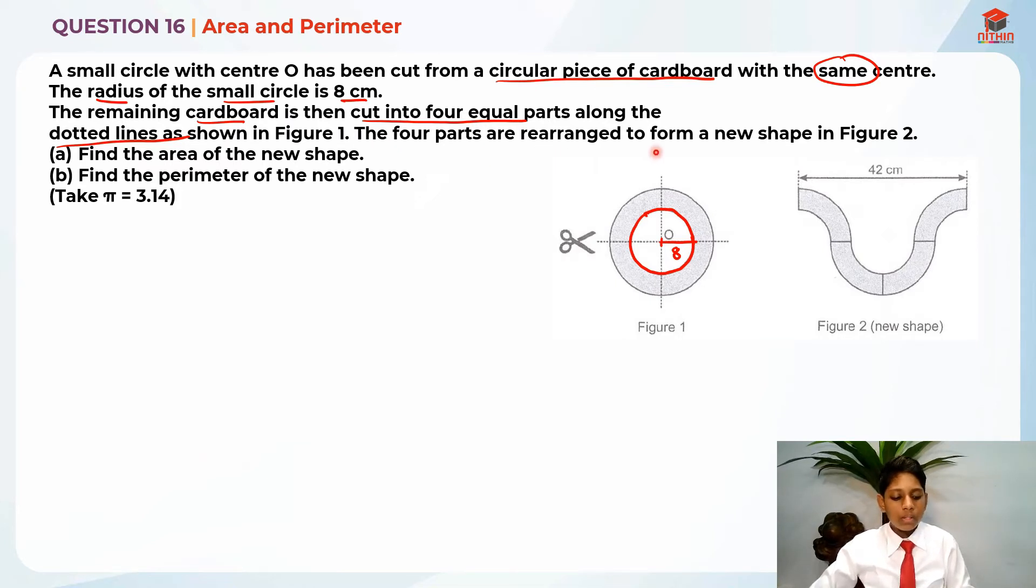The four parts are then rearranged to form a new shape in figure 2. So let me call the cardboard as a shaded area. So the shaded area is basically reformed into a new shape. Find the area of the new shape. So they're asking us to find the area of the cardboard.